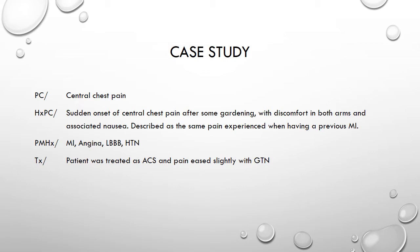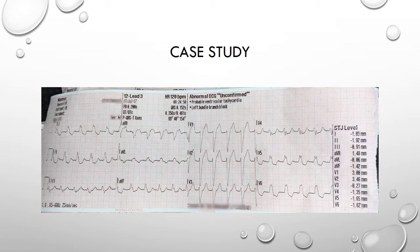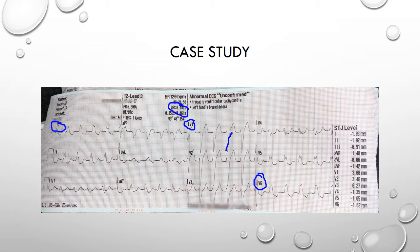Here we have one of the initial 12 Lead ECGs recorded by the crew, and we can clearly see it is a left bundle branch block, correctly interpreted by the computer. How do we know it's left bundle branch block? If we look at the QRS complexes in leads V1, V6 and lead I, we can clearly see left bundle branch block morphology. The QRS duration is wide at more than 120 milliseconds, and we've also got a dominant S wave in lead V1 and absent Q waves in both lead I and lead V6.